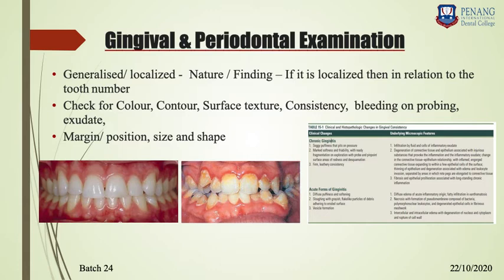Surface texture: stippling, whether present or absent. Stippling is an orange peel appearance — when you dry the gingival surface with cotton or gauze, you can see minute small dots like an orange peel. This is not a static finding seen in all healthy patients — it may vary between different patients, being very clearly visible in some and not clearly visualized in others.